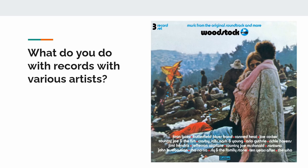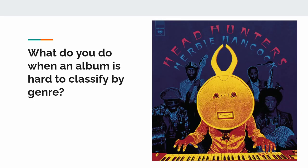For example, what do you do with a compilation album with various artists? Do you organize it by the title of the record — in the W section for Woodstock — or maybe put it under V for various artists? Similarly, if she was organizing by genre, what do you do with a record that's hard to classify? In the case of a Herbie Hancock record, you might classify it as jazz, but somebody else might classify it as funk or soul music. Depending on the one organizational method she chooses, she may face different classification challenges.